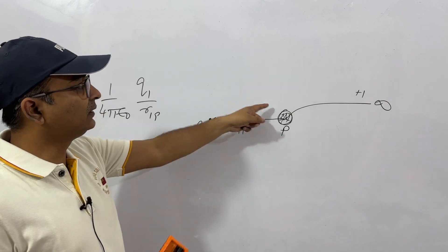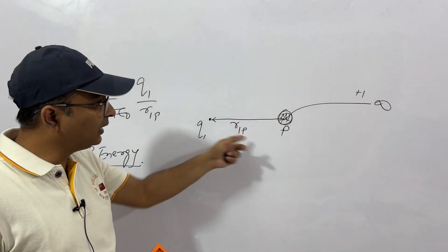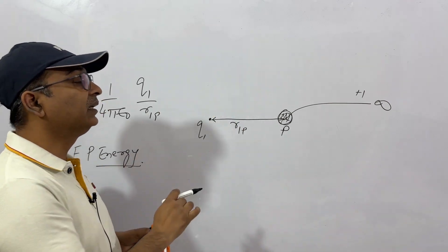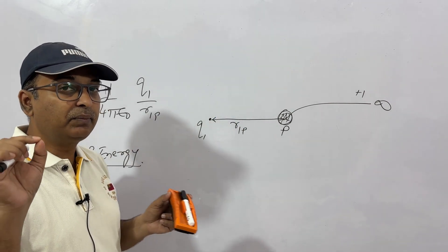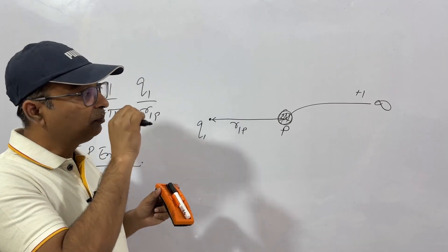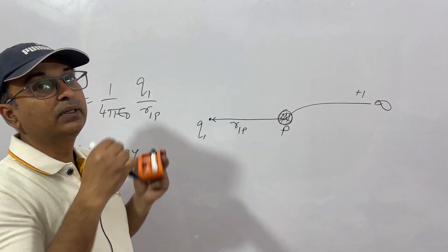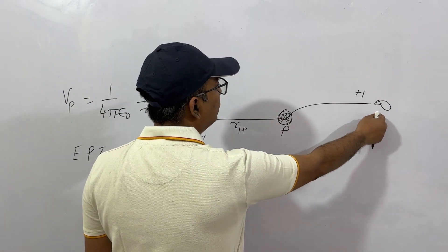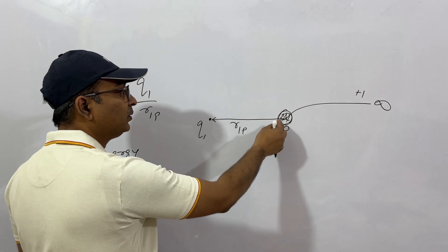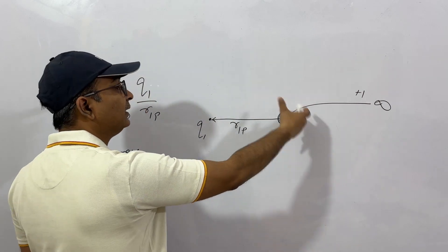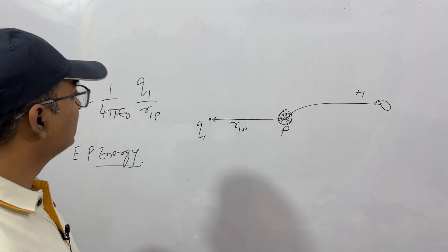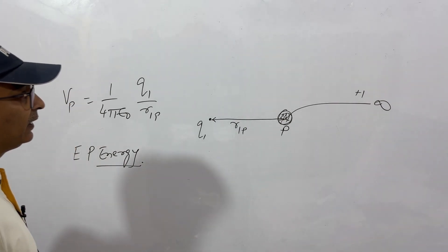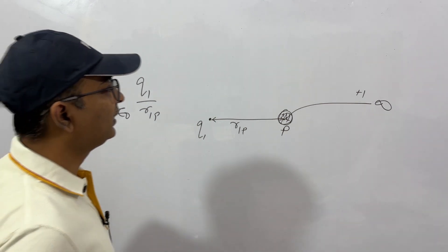This energy is stored at this point, which is called potential energy — electric potential energy. Because of the interaction of this charge with the electric field produced by q1, or if we have a uniform electric field, we have electric potential energy. More simply: you do work in bringing a charge from infinity to a certain point in an electric field, and that work is stored as potential energy.